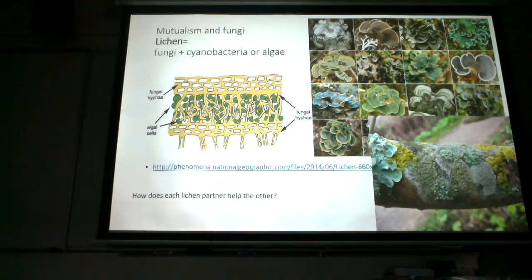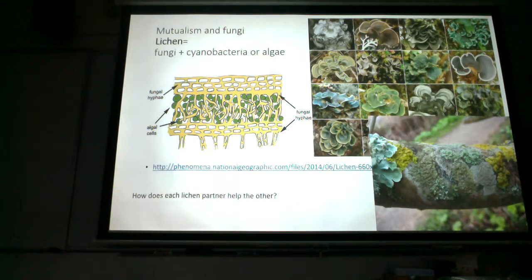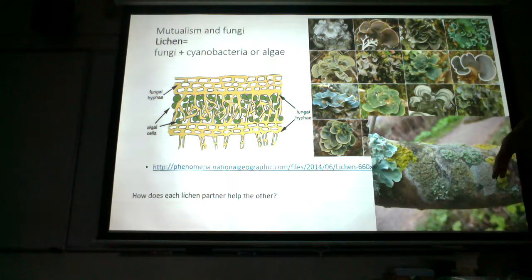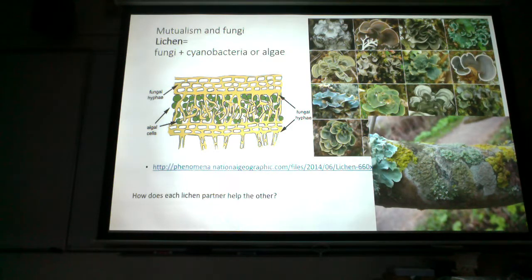Lichens are symbiotic relationships between fungi and a photosynthetic partner — cyanobacteria or algae. This is win-win, so we want to know why. On the bench floor we have some beautiful examples of lichens. There are three different types of lichens. No matter which type I put on the lab exam, you need to be able to identify it as a lichen.